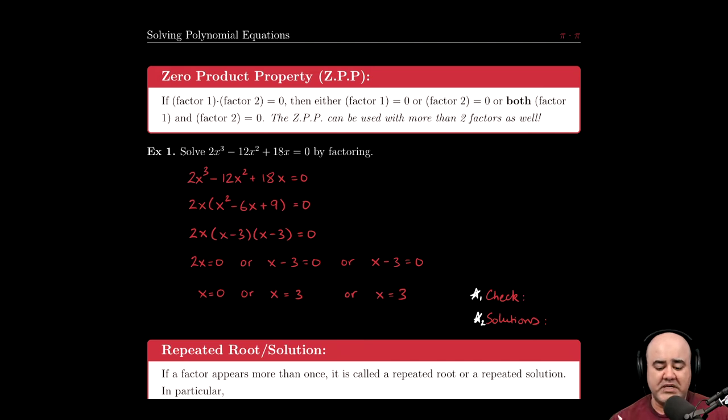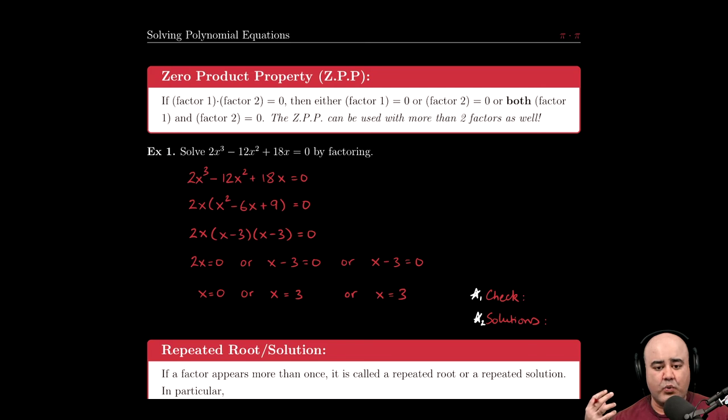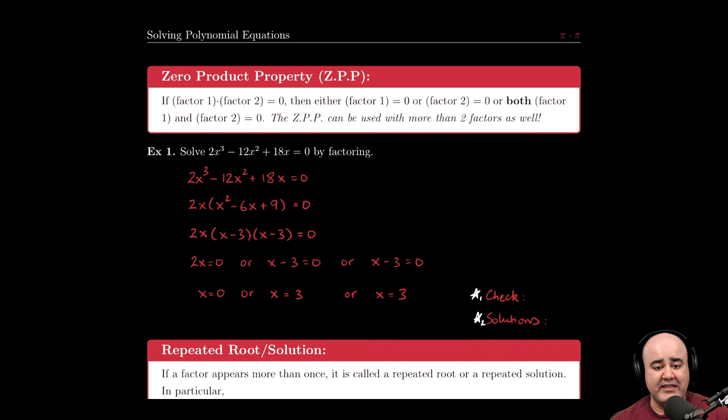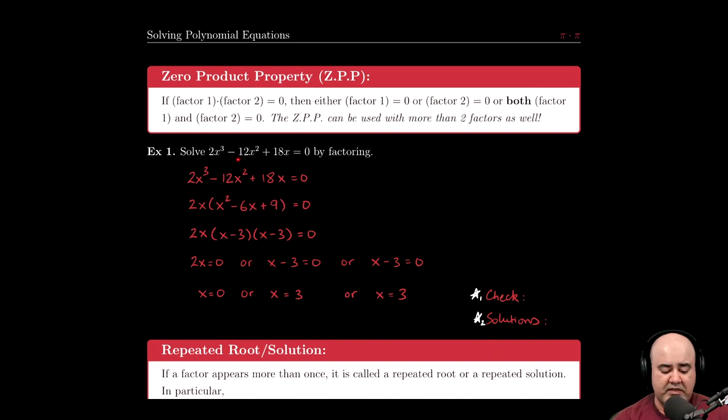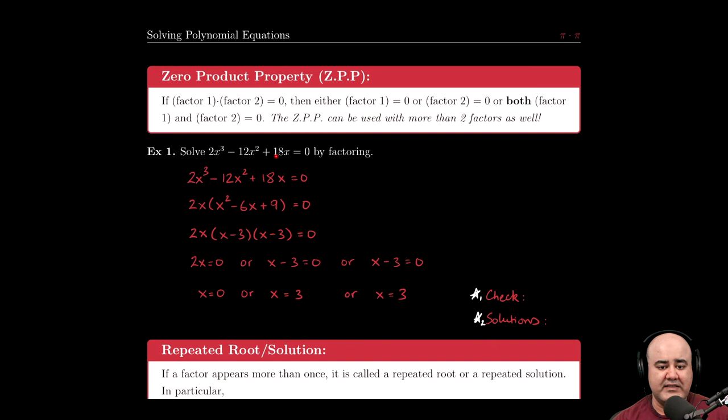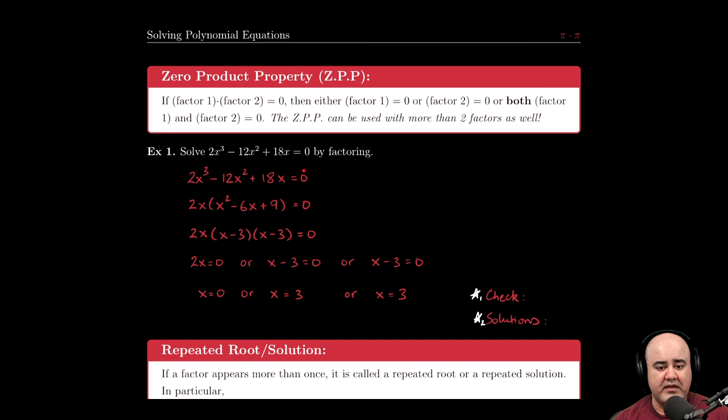Anytime you're solving polynomial equations, the first thing you want to do is make sure that one side of the equation is equal to zero. In the intro problems and the homework and assessments, almost certainly you're going to get problems that are not set equal to zero to begin with. This example one is already set equal to zero, but had this problem been 2x³ - 18x - 12x² equals -18x, you would first need to move the -18x to the left hand side, set one side equal to zero, and then start doing what we're doing here.